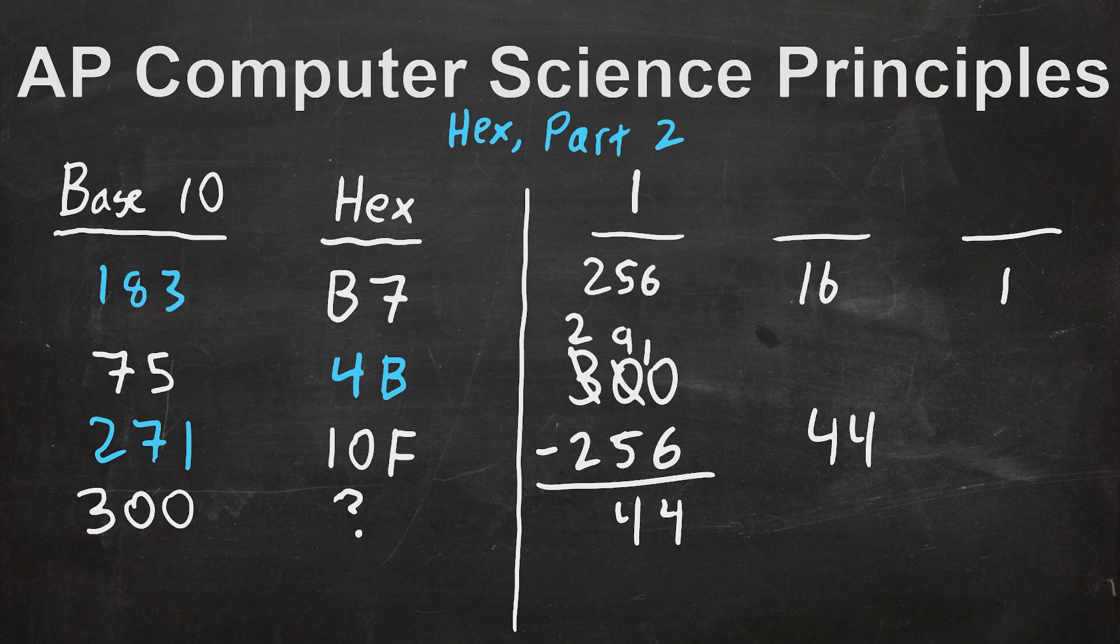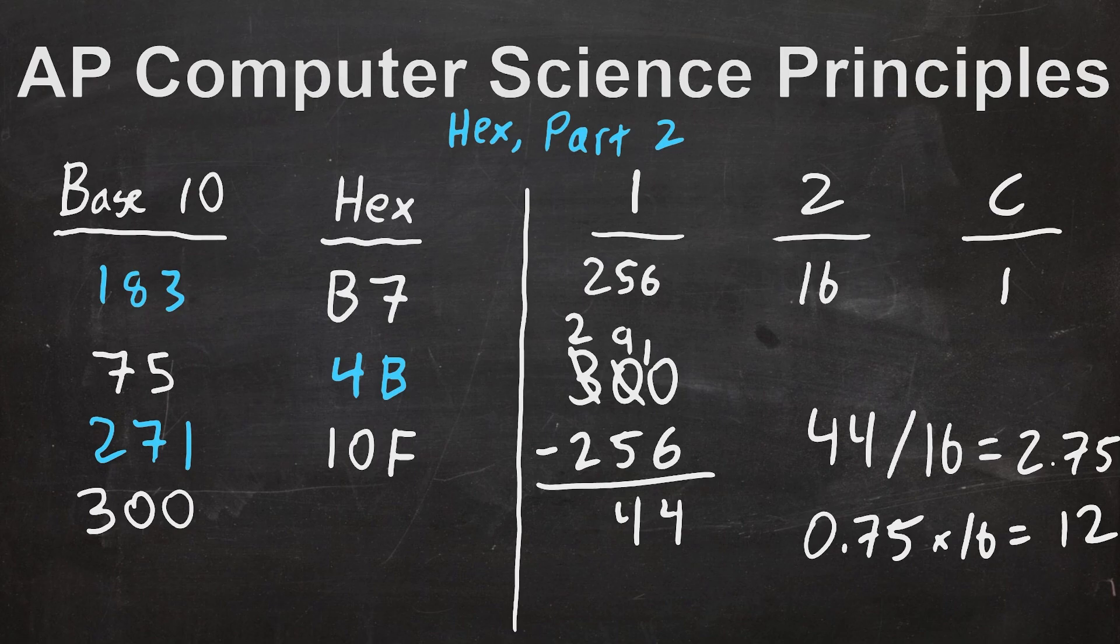Now, just like we did a couple of problems ago, we need to figure out how many 16s and how many ones make up that 44. And just like then, we're going to go ahead and do it via division. My calculator tells me that 44 divided by 16 is 2.75. So I will put a 2 in the 16 spot, and then I will take the 0.75 that's left over, multiply it by 16 to get 12. In hexadecimal, 12 is C. So the correct representation of 300 in hexadecimal is 12C.